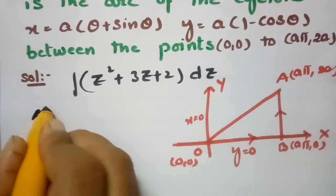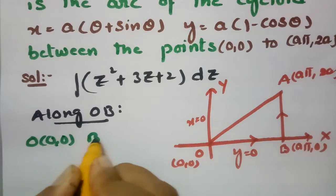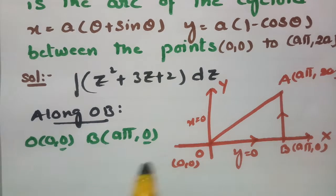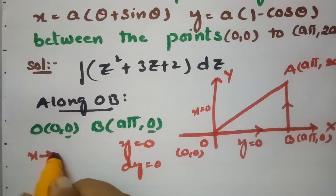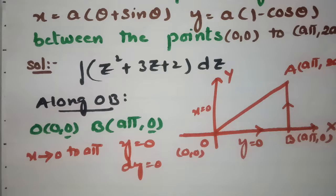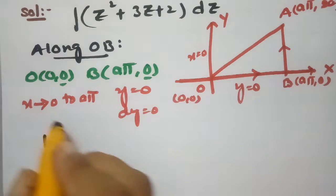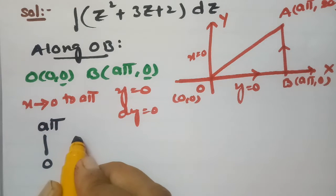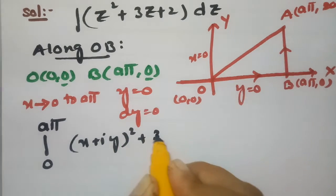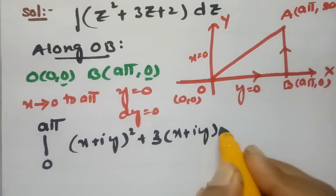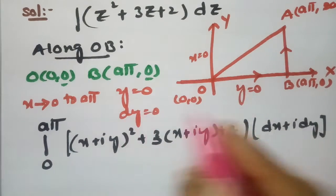First, along OB. Here O is the origin (0, 0) and B is (aπ, 0). Along OB, y is fixed, so y = 0 and dy = 0. X varies from 0 to aπ. Substituting z = x + iy and dz = dx + i·dy, since dy = 0, the integral becomes the integral from 0 to aπ of x squared plus 3x plus 2 dx.